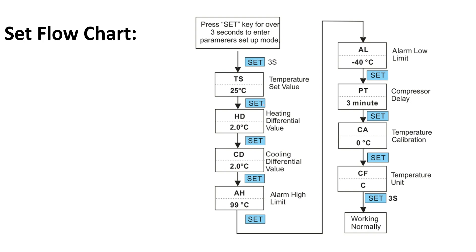After heating differential, the user sets the cooling differential value, alarm high limit, alarm low limit, and PT — the preset compressor delay time. CA is the calibration factor, which is an offset added or subtracted from the temperature measured by the sensor. Finally, the unit can be set. To exit, press the SET key for three seconds and the parameters will be saved.